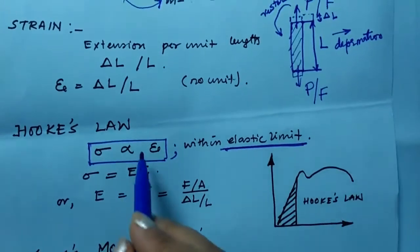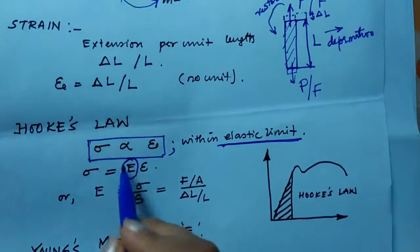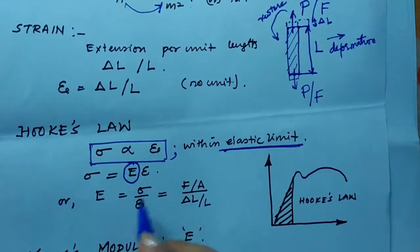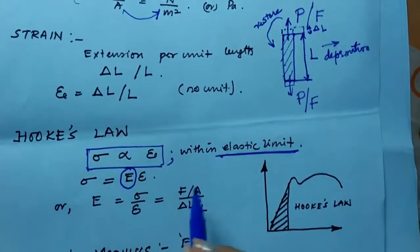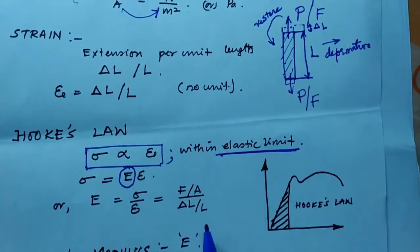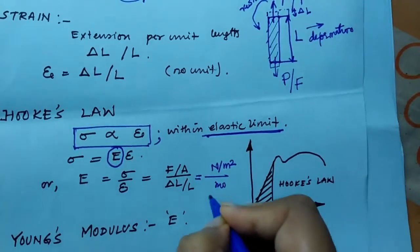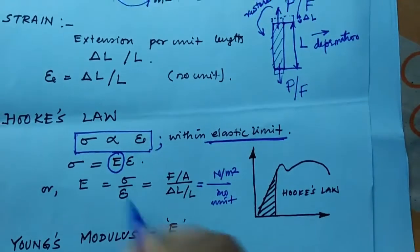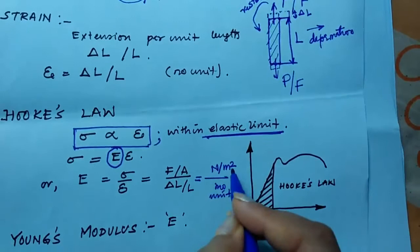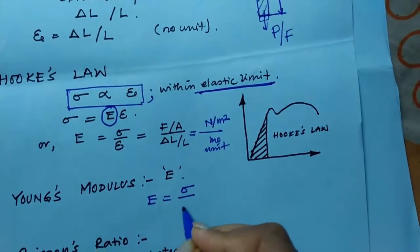When stress is directly proportional to strain within the elastic limit, that is Hooke's Law. Removing the proportionality, we introduce a constant E, so E equals sigma divided by epsilon — that is, stress divided by strain. Sigma is force per area and epsilon is delta L by L, which is change in length by original length. Epsilon has no unit, so the unit of E is Newton per meter squared. This constant E is called Young's modulus.